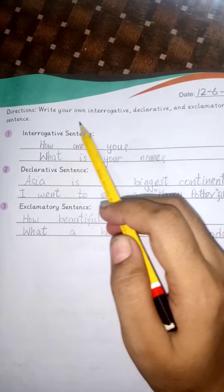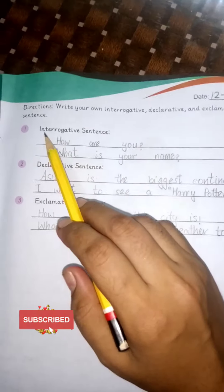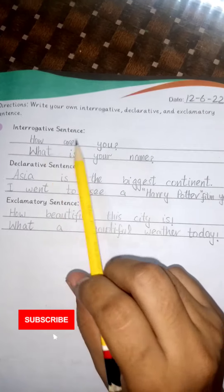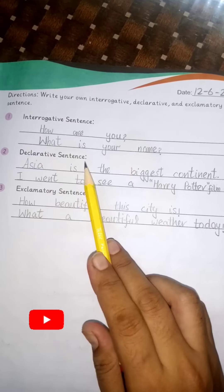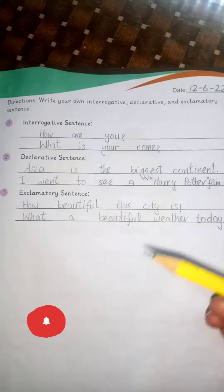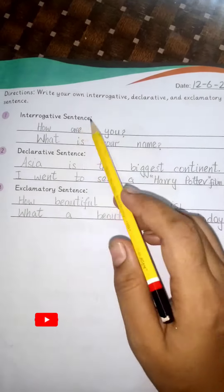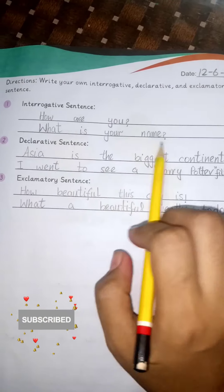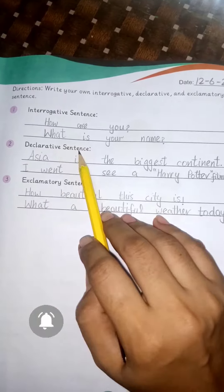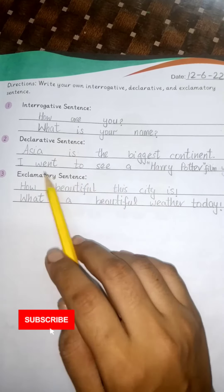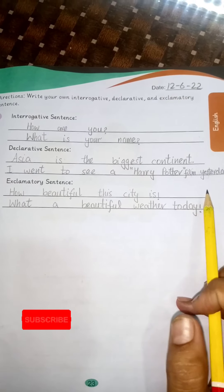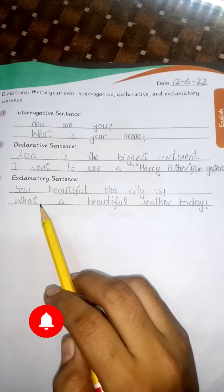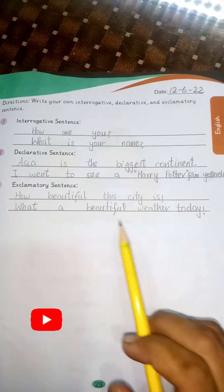Directions: Write your own interrogative, declarative, and exclamatory sentences. Sample exclamatory sentences: We went to see a Harry Potter film yesterday! How beautiful this city is! What beautiful weather today!